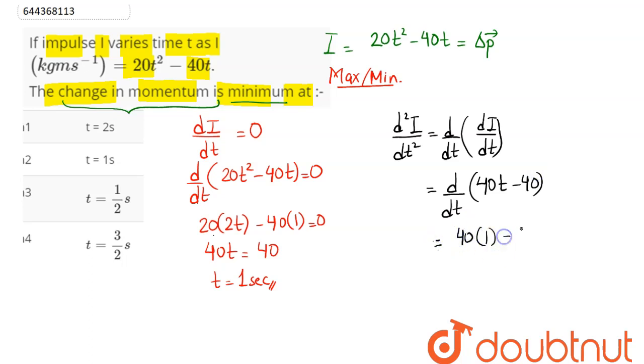Now at t = 1, we can see this second derivative value comes as positive, which means